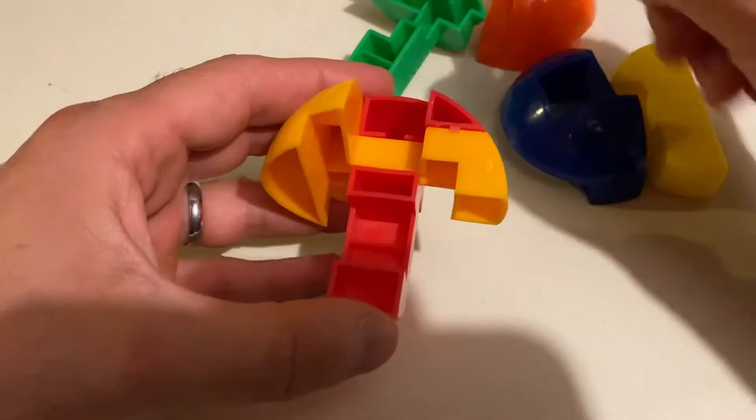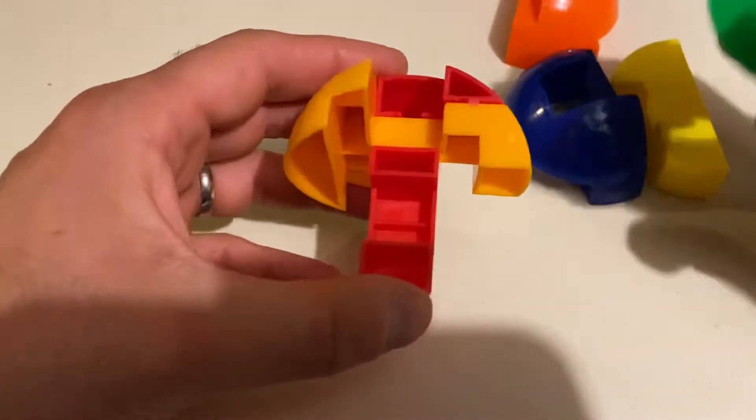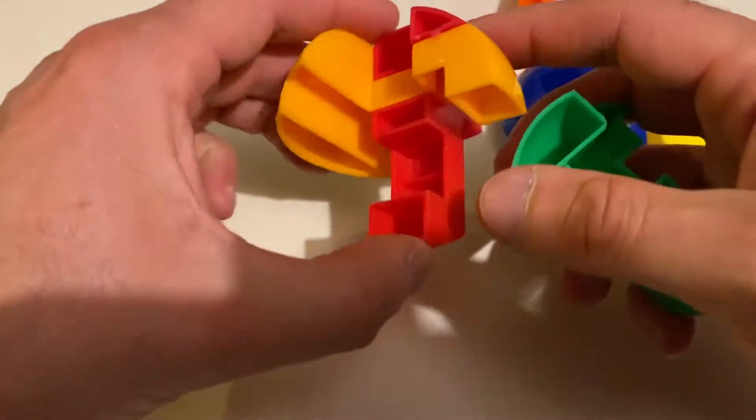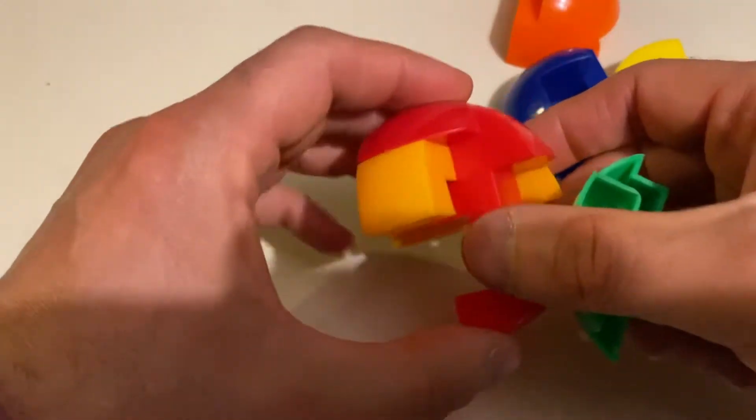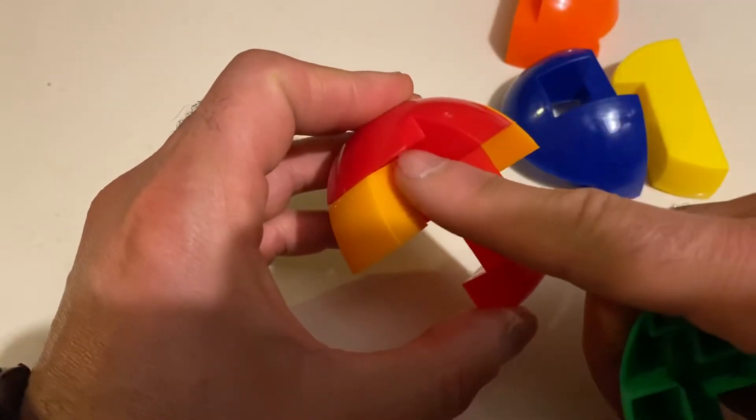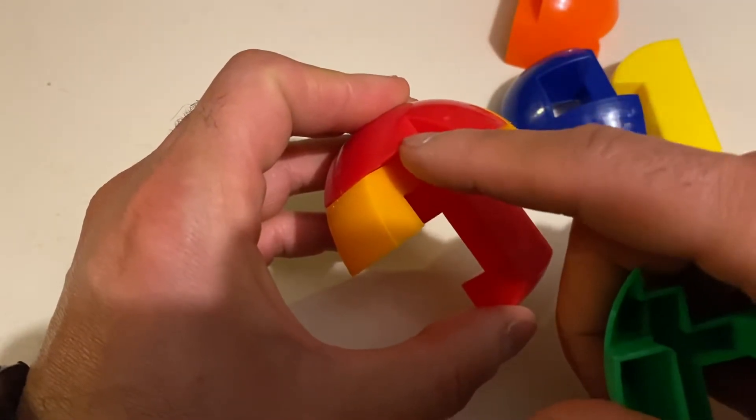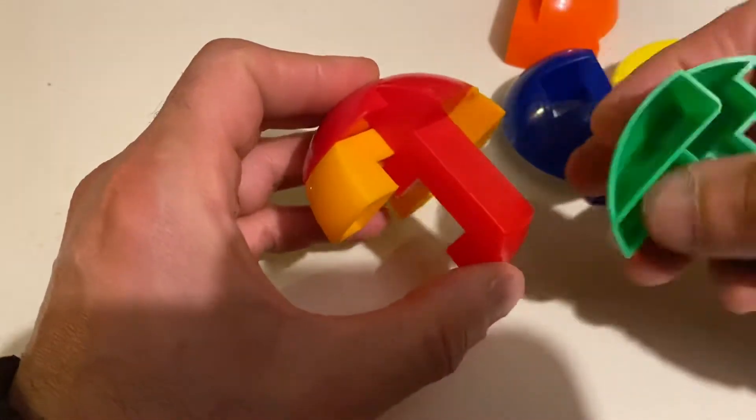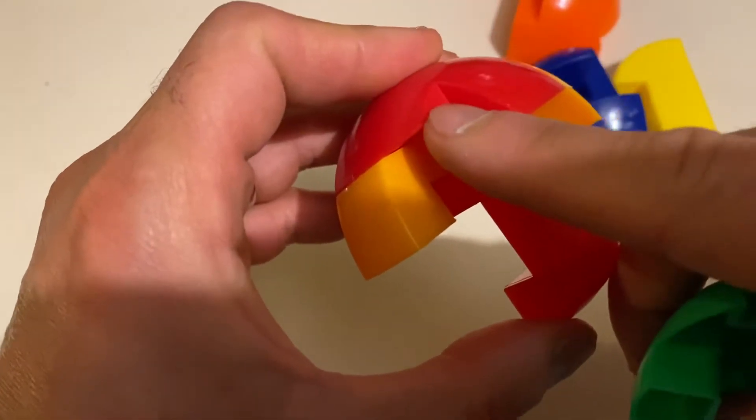The third piece is this green piece, and the giveaway feature - the feature that gives it away - is this rest right here. I don't know if you see it, you see this flat spot right here.